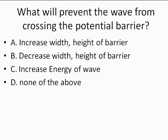What will prevent the wave from crossing the potential barrier? A. Increase width and height of the barrier. B. Decrease width and height of the barrier. C. Increase the energy of the barrier. D. None of the above.